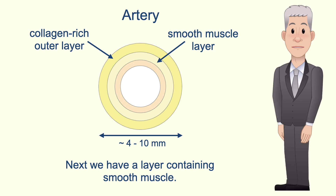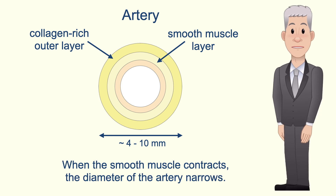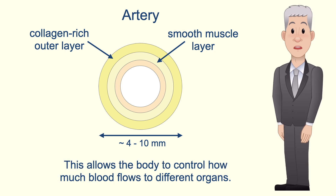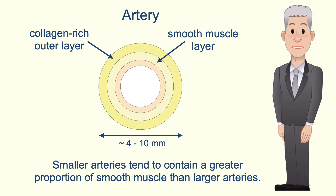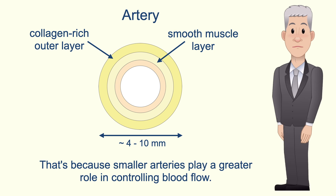Next we have a layer containing smooth muscle. When the smooth muscle contracts, the diameter of the artery narrows, which allows the body to control how much blood flows to different organs. Smaller arteries tend to contain a greater proportion of smooth muscle than larger arteries because they play a greater role in controlling blood flow.